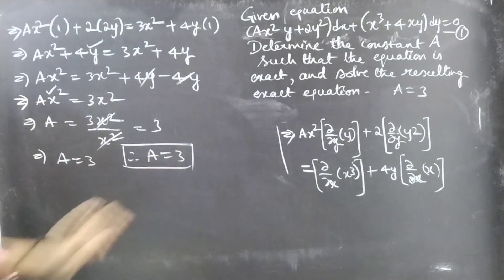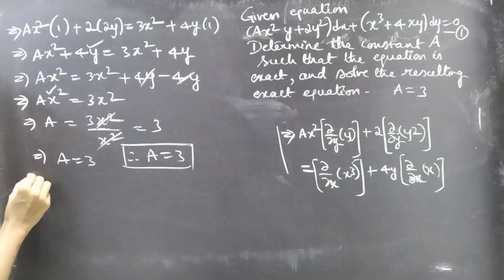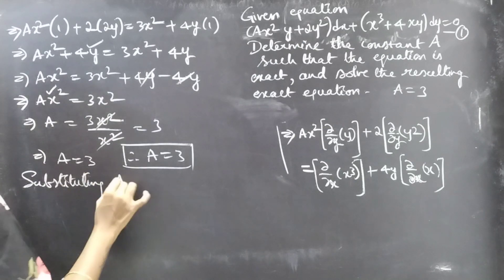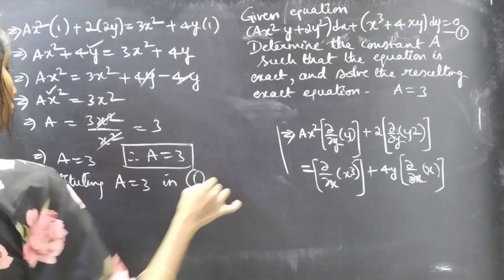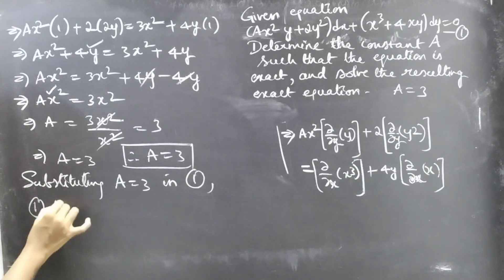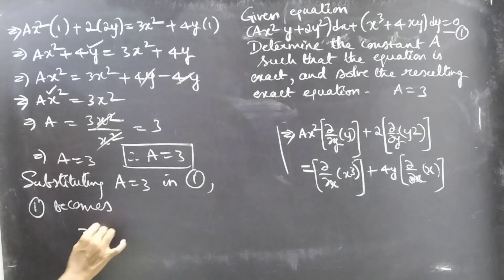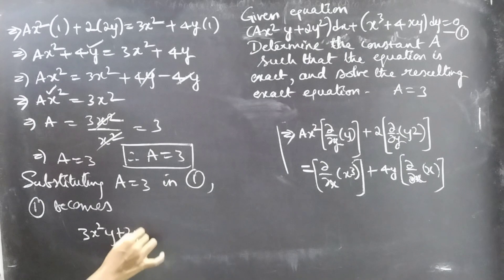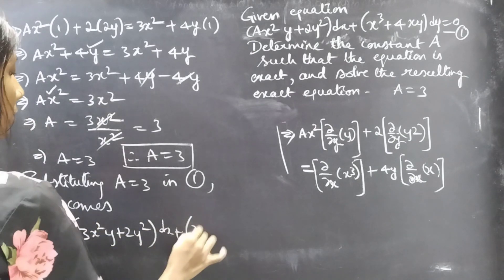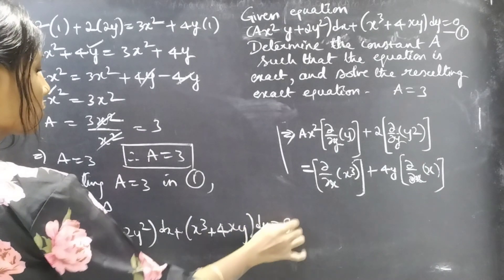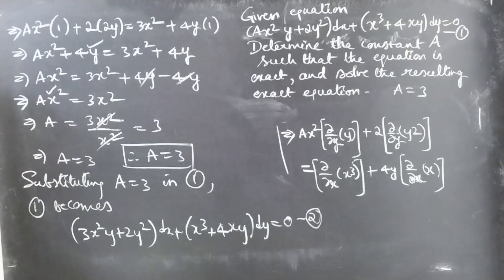Now substitute a = 3 in equation 1. Then equation 1 becomes (3x²y + 2y²)dx + (x³ + 4xy)dy = 0, which we consider as equation 2 — the resulting exact equation. Let's verify that it is indeed exact for our convenience.